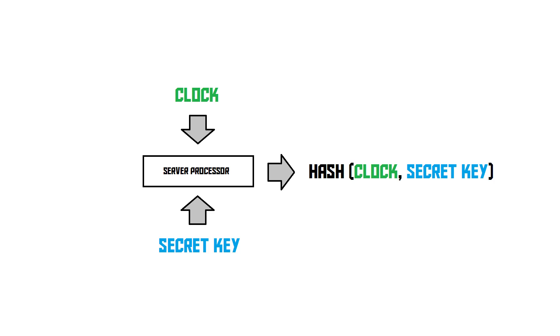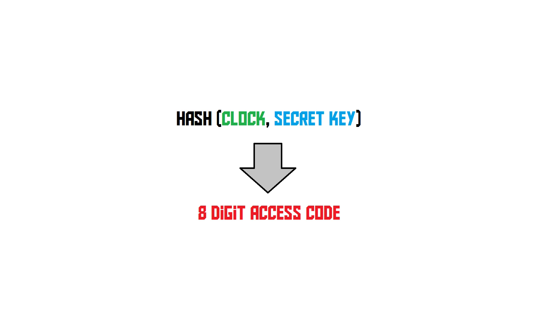When you're trying to log in, you type in your normal password and press enter. The server confirms it's correct, then takes the current value of its clock — how many minutes have gone by since synchronization. It also takes its secret key that nobody knows, and combines these two values. It produces a hash of the current clock value combined with the secret key. This hash can't be reversed — hashing is a one-way process. That produces a certain hash, a random-looking pile of data. The server then simplifies this hash into an eight-digit code.